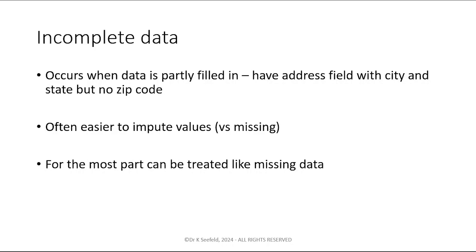Incomplete data I consider sort of missing data. Incomplete data is when the data is partially filled in. Typically, you fill up part of an address and you leave off the zip code; a lot of times you can get that from somewhere. You might have to match cities and states to zip codes in a table to fill things in, and yes, you may have to spend a lot of time doing something like this to make your data useful. Often it might be easier to just impute values. For the most part, incomplete and missing data are treated exactly the same way.